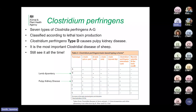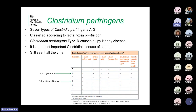Clostridium perfringens type D is the most common Clostridial disease of sheep and definitely the most economically important. We see a lot of it in the post-mortem room. Type D produces alpha toxin and epsilon toxin, which we'll come back to. The other type affecting sheep is lamb dysentery, which produces alpha, beta, and epsilon toxin. This information comes from a really useful article on Clostridial diseases in farm animals written by Arthur Otter and Francisco Uzal — well worth reading.